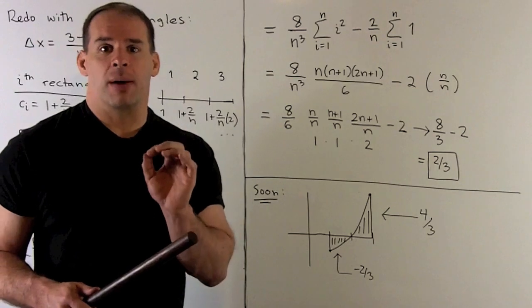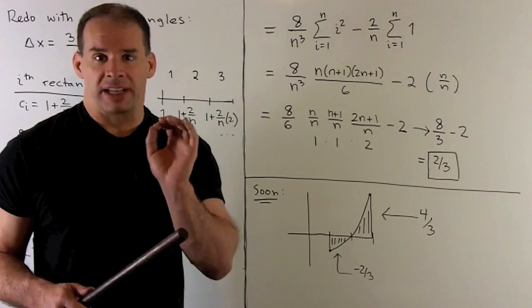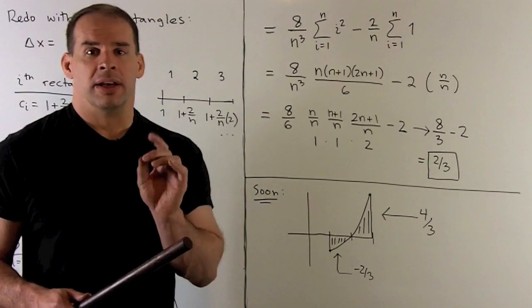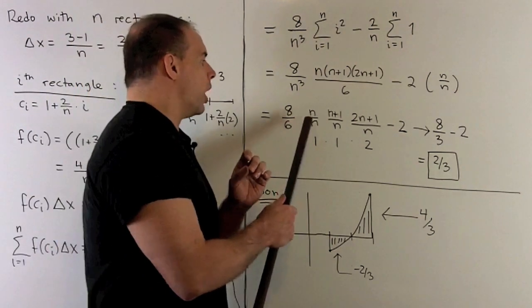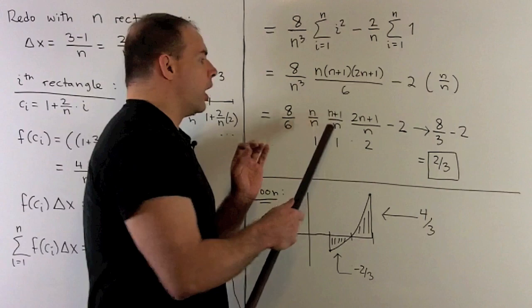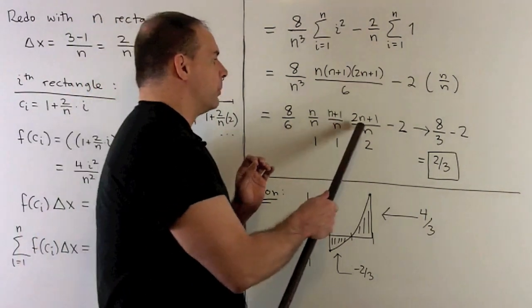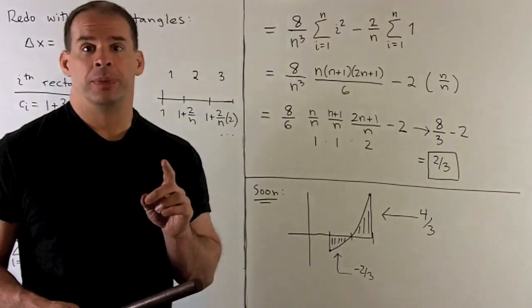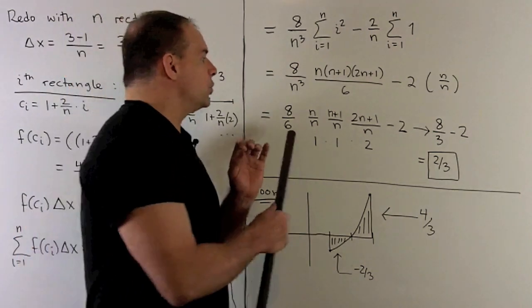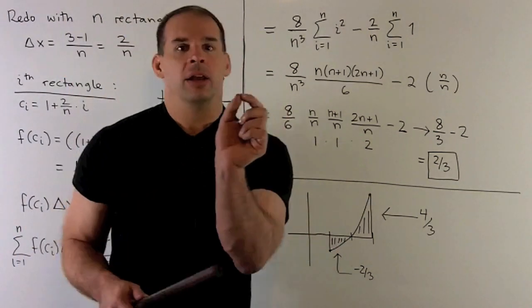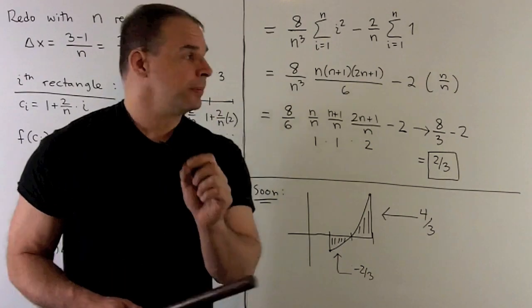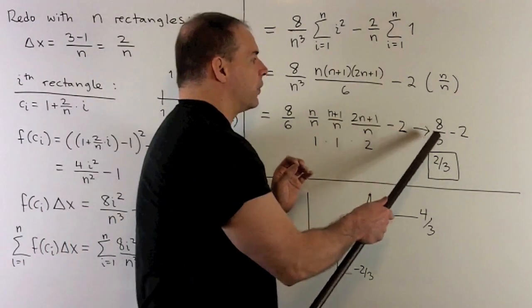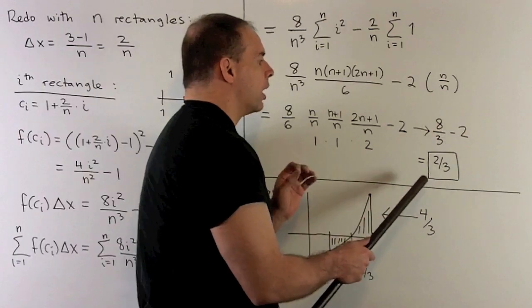So, that's going to be the Riemann sum for when we have n rectangles. Now, if we let n get large without bound, this term's a 1. This term is going to go to 1 as we let n go to infinity. This term here is going to go to 2. So, if I let n go to infinity, meaning we let the base of our rectangles get thinner and thinner and thinner, we're going to have 8 thirds minus 2 or a 2 thirds.